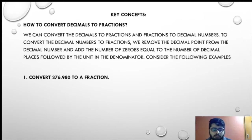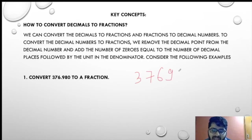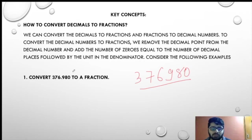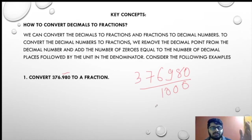Consider the following example. We have to convert 376.980. I have removed the decimal point. Now, how many numbers are after the decimal point? Three numbers. So I will put three zeros in the denominator. That is the logic. This is how I convert decimal into fraction.